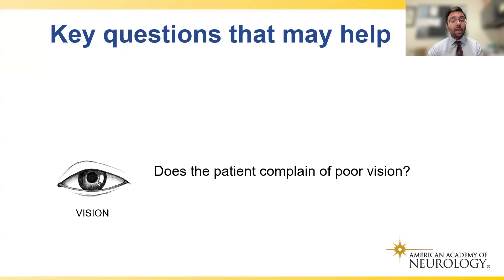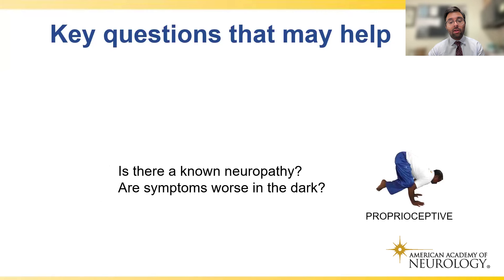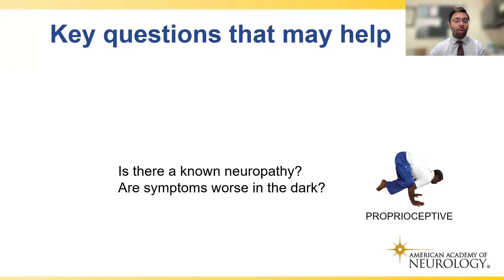For vision: does the patient complain of poor vision — possibly cataracts or other causes? That can certainly contribute to imbalance. For proprioception: are symptoms worse in the dark? At night, going to the bathroom, we're removing vision as a modality and depending more on proprioception and vestibular sense. If proprioception is impaired, symptoms worsen in the dark. Is there a known neuropathy, or diabetes that might indicate a proprioceptive problem?